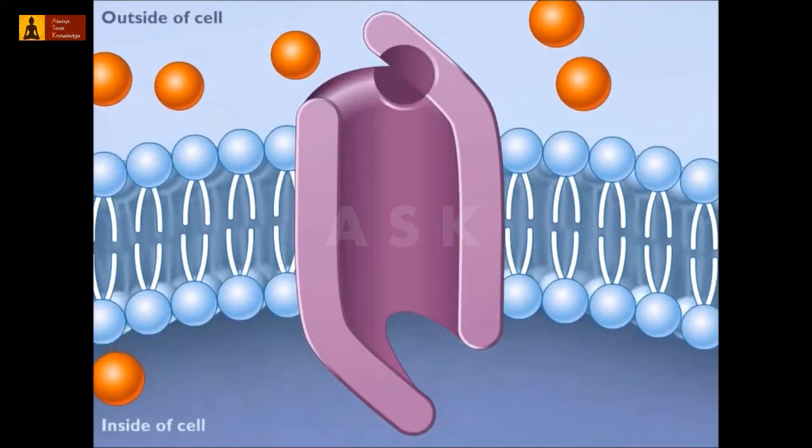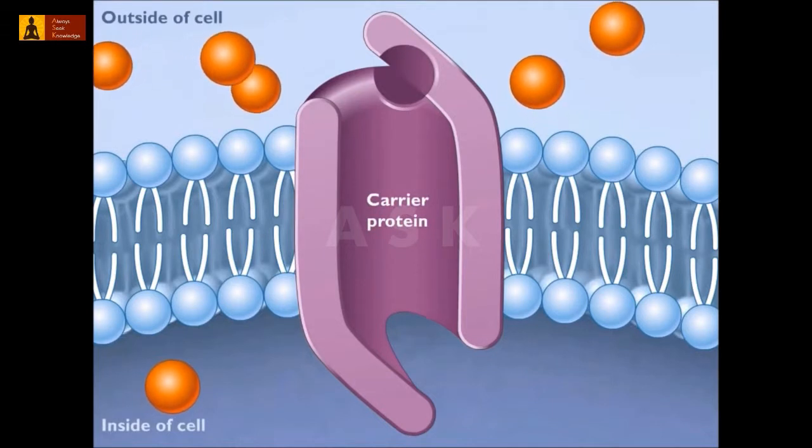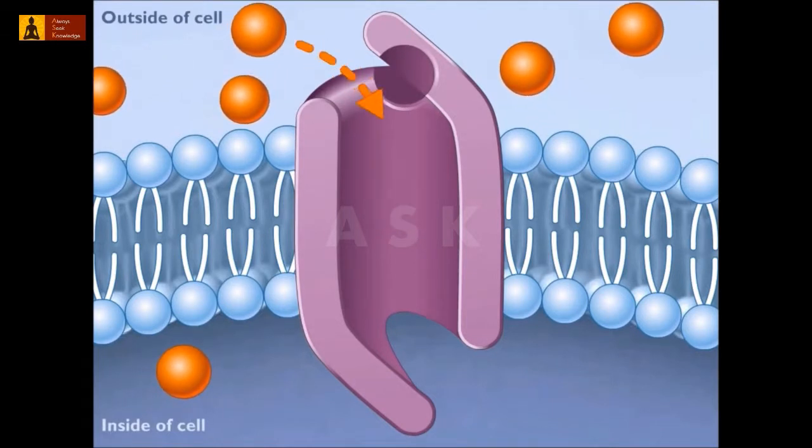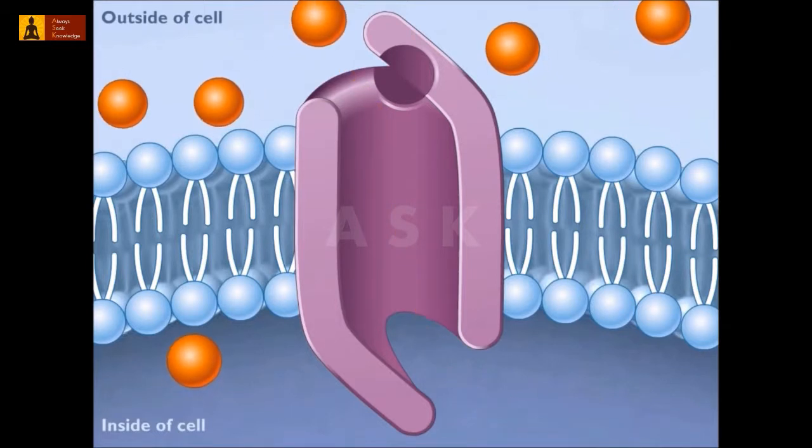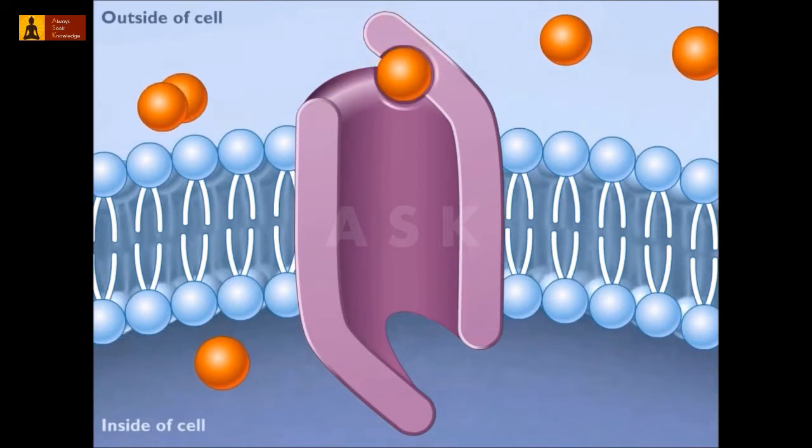In the process known as facilitated diffusion, a special carrier protein with a central channel acts as a selective corridor which helps molecules move across the membrane. These special carrier molecules that form the protein channel bind only to a specific molecule, such as a particular sugar or amino acid.